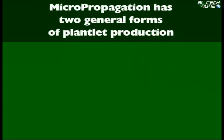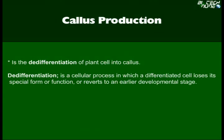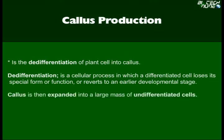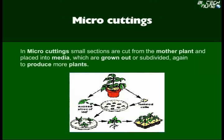Micropropagation has two general forms of plantlet production: callus production and micro-cuttings. Callus production is the de-differentiation of plant cells into callus. De-differentiation is a cellular process in which a differentiated cell loses its special form or function, or reverts to an earlier developmental stage. Callus is then expanded into a large mass of undifferentiated cells, and then activated by selected use of plant hormones to re-differentiate and produce shoots, roots, and ultimately plantlets. In micro-cuttings, small sections are cut from the mother plant and placed into a media, which are grown out or subdivided again to produce more plants.